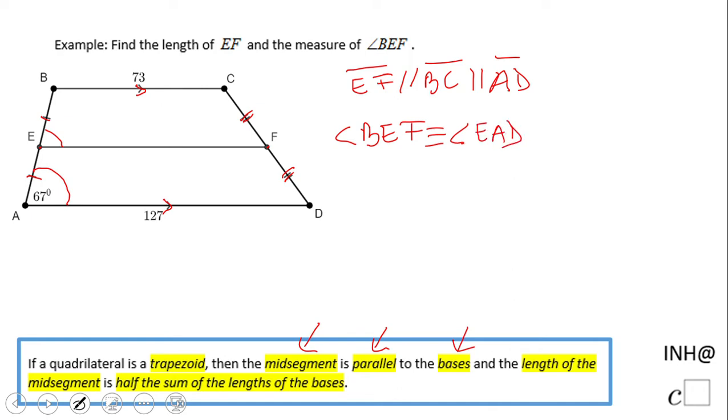Because those two angles are corresponding angles. So the measure of angle BEF will be the same as the measure of angle EAD. And in this case, since angle EAD is 67, BEF will be 67. Very simple.